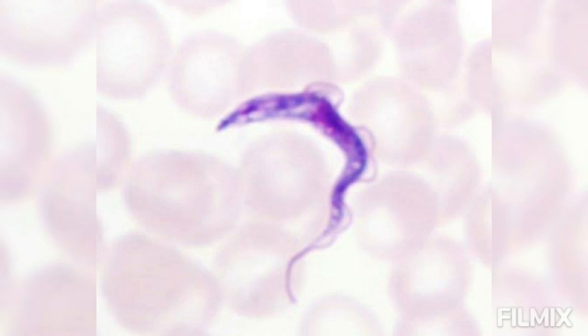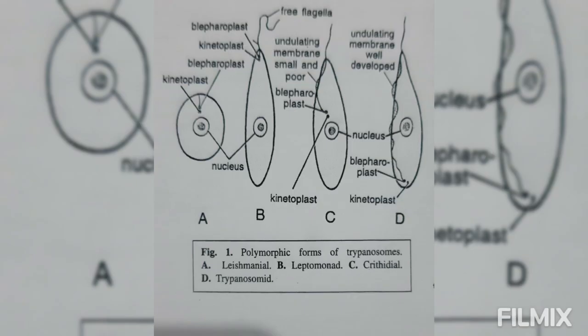Fourth, trypanosomid or trypomastigote. Body elongate and slender. Blepharoplast and kinetoplast situated at or near the posterior end. Undulating membrane conspicuous.